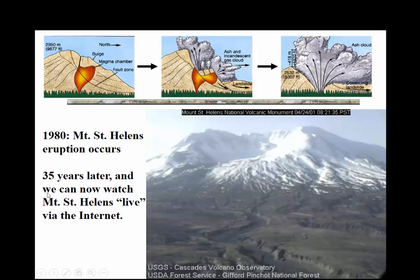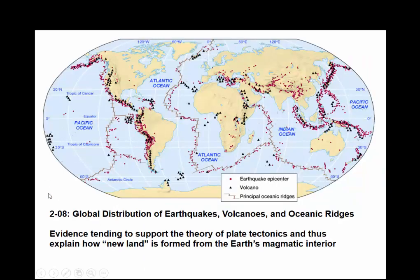35 years later, we can actually look at it live via the Internet. This is a global distribution of earthquakes, volcanoes, and oceanic ridges — you can see the Pacific Ring of Fire. We have a lot up in Alaska and off the coast of California. Many of these volcanoes are not active — they're either dormant or extinct. But where they do affect populated areas, that's what we call a natural hazard. Several off the coast of Alaska don't affect many people, but they do affect airplane travel across the Pacific Ocean.